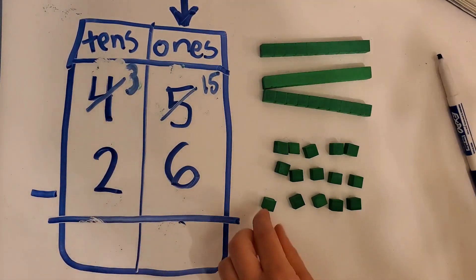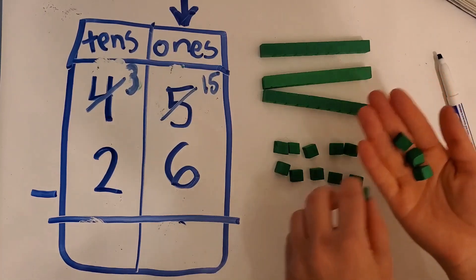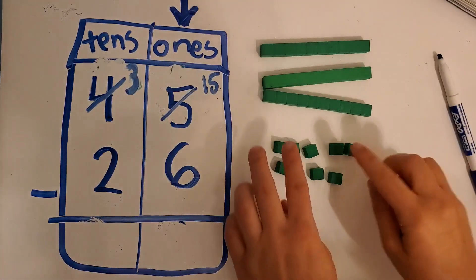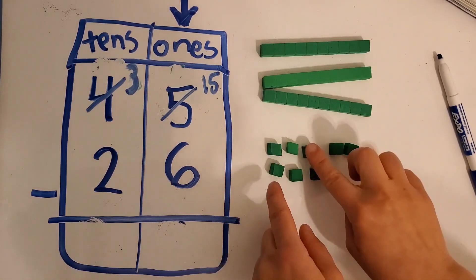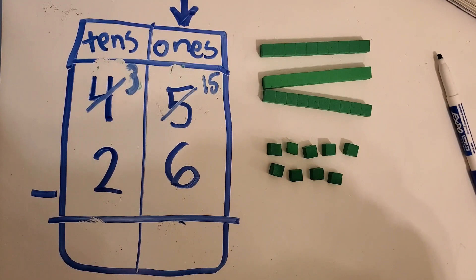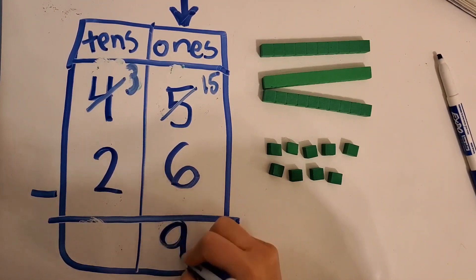So fifteen minus six. Let's take away six. One, two, three, four, five, six. So then, how many do we have left? Count the ones. How many do we have? Go ahead and count them. Nine. We have nine ones.